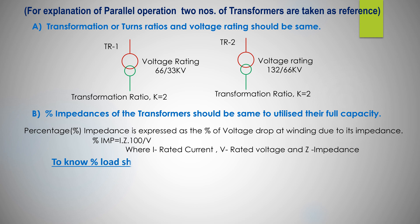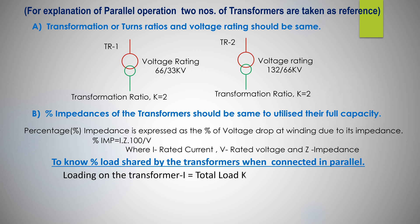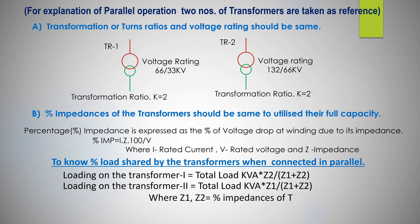To know percentage of load shared by the two transformers when connected in parallel: Loading on transformer 1 = total load KVA × Z2 / (Z1 + Z2), where Z1 and Z2 are percentage impedances of transformer 1 and transformer 2 respectively. Generally, transformer with lower percentage impedance shares more load than that of higher percentage impedance rating.